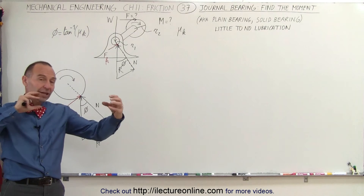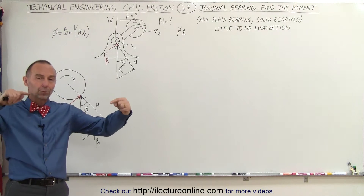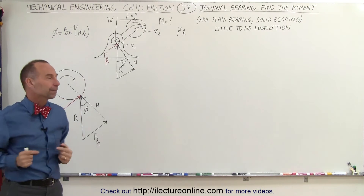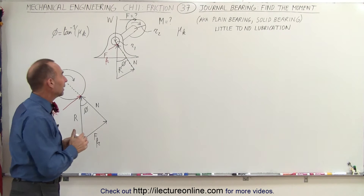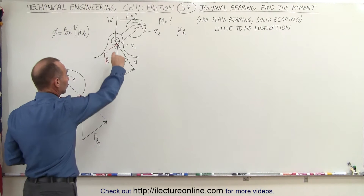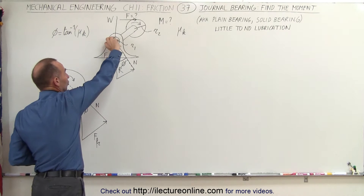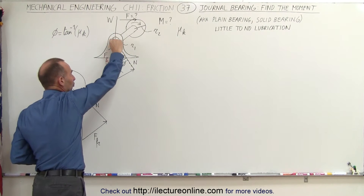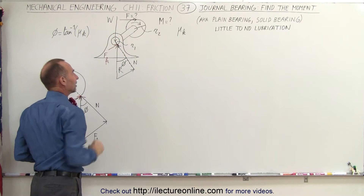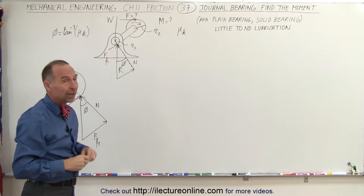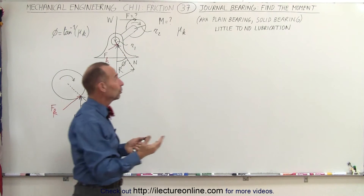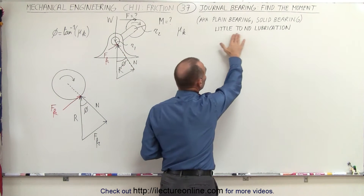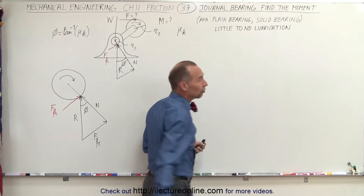A journal bearing is simply a solid axle that rotates inside a housing, and there is friction between the solid axle and the surface it rotates inside. We assume there is little to no lubrication.